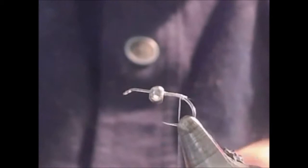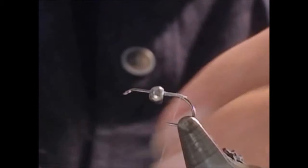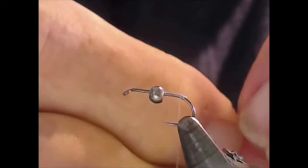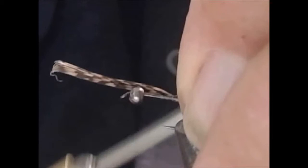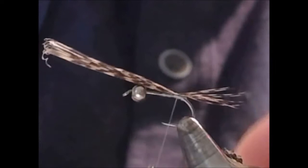For the tail, I'm going to use a feather that I've taken from a Hungarian partridge skin. Grab a nice clump, make sure the ends are even, and I'm going to make this about the length of the shank. Make a soft wrap and then a tight wrap over the top. We'll pull it just a tad to size, and then continue securing it to the shank down to the point.